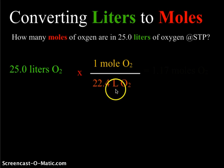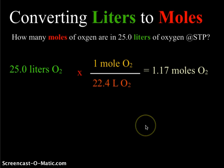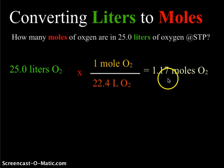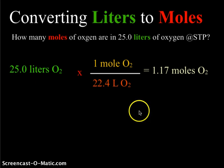Our conversion factor is built so that liters is in the denominator — canceling liters — and moles is in the numerator, so we end up with moles. When we divide 25.0 by 22.4, the liter units cancel and we get 1.17 moles of oxygen. The original value has 3 significant digits, so our answer is 1.17 — also 3 significant digits.